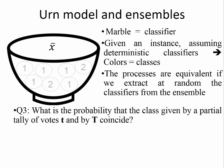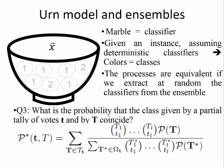And we can pose the following question. What is the probability that the class given by a partial tally of votes, small t, and by the full ensemble coincide? This is given by the following formula where the outer sum goes over all possible big T outcomes compatible with the observed small t and that produce the same classification of the observed small t.